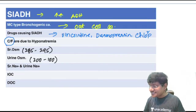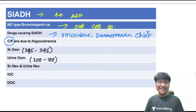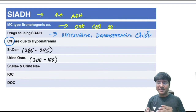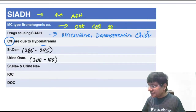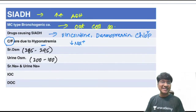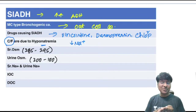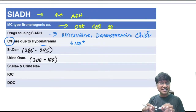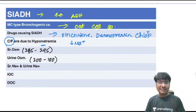Clinical features of SIADH are due to hyponatremia caused by compensatory mechanisms. Features include altered sensorium, seizures, headache, projectile vomiting, coma, and death. Serum osmolality is reduced and urine osmolality is increased in SIADH patients.